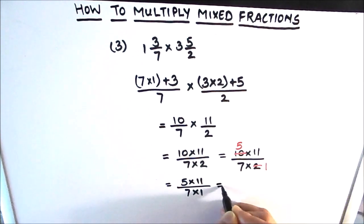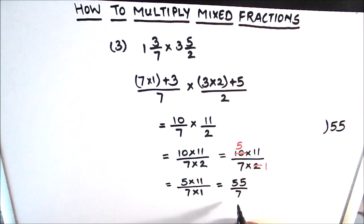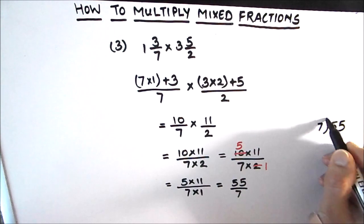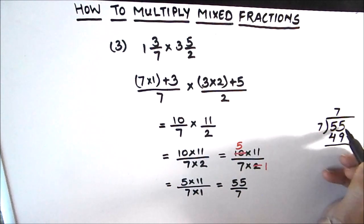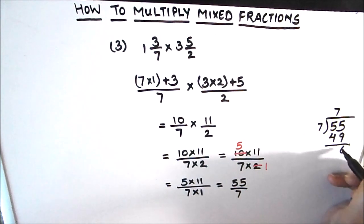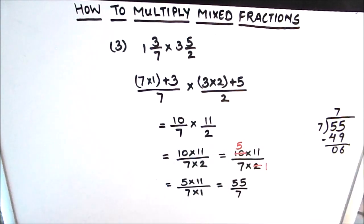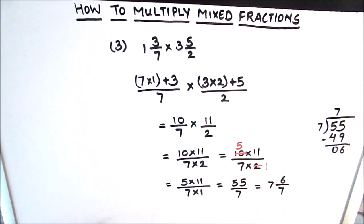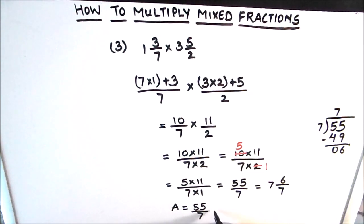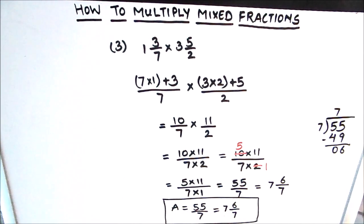The denominator is 7 times 1, giving us 55 upon 7. We can also write the answer as a mixed fraction by dividing 55 by 7. 7 times 7 is 49, with a remainder of 6, so our mixed fraction is 7 and 6/7. Our final answer is 55 upon 7 as an improper fraction, or 7 and 6/7 as a mixed number.